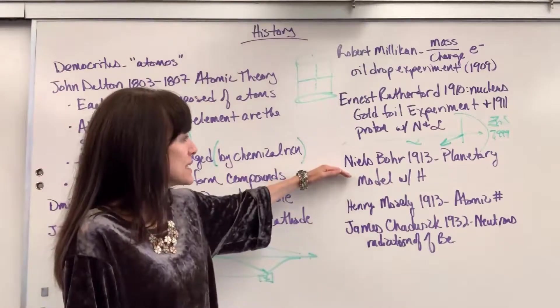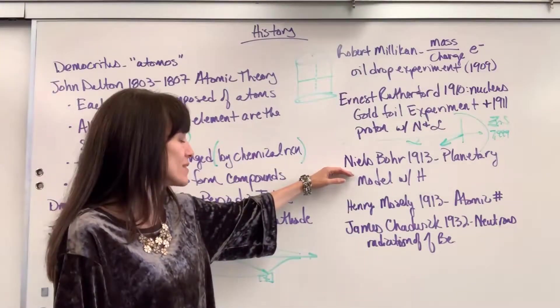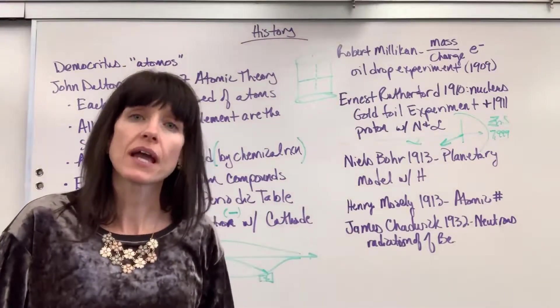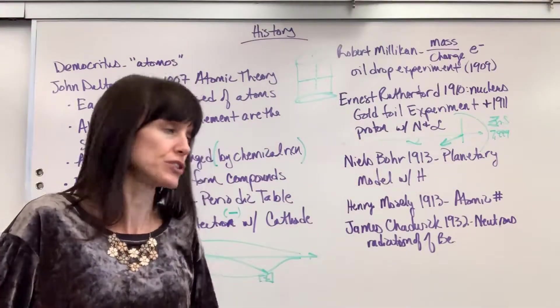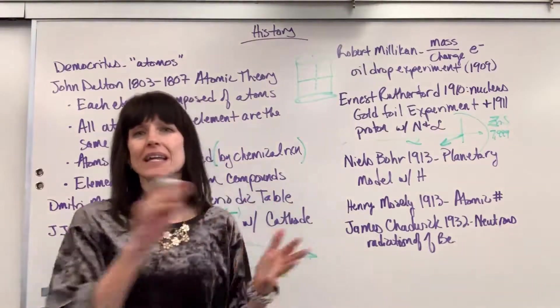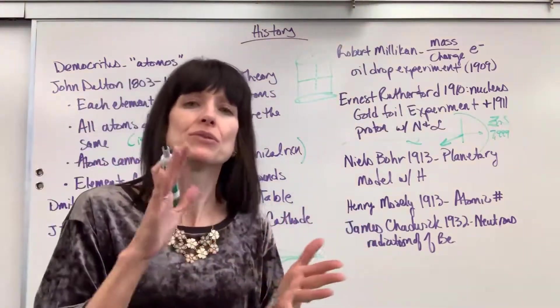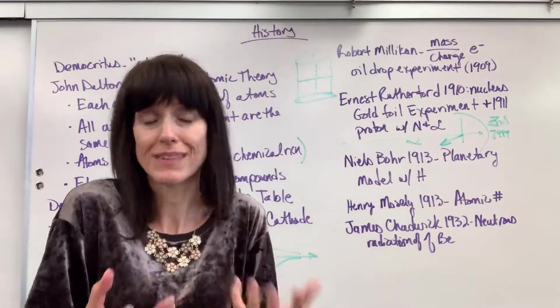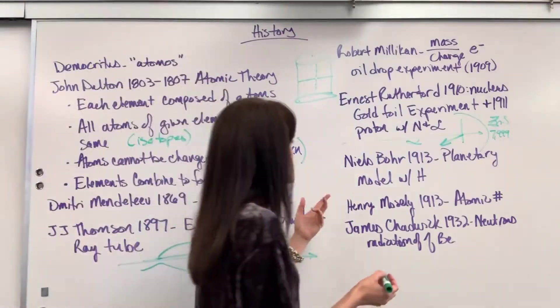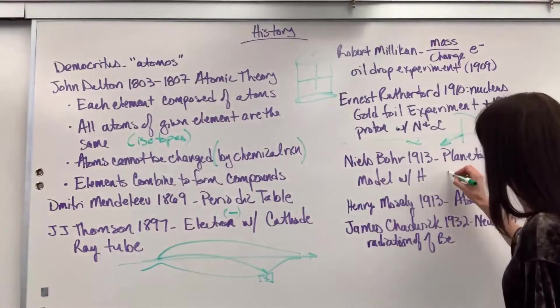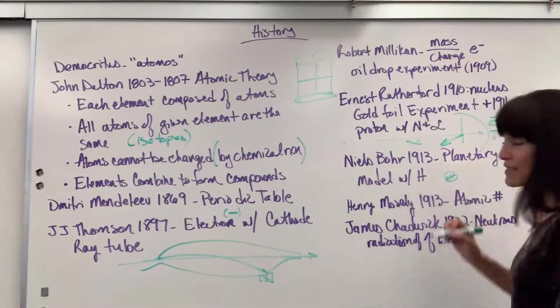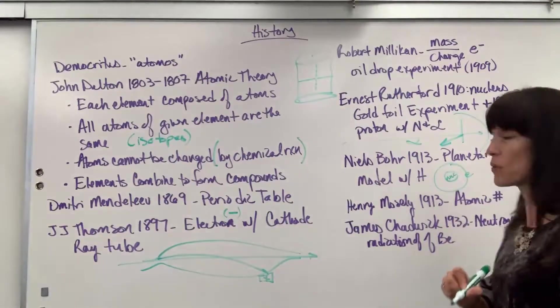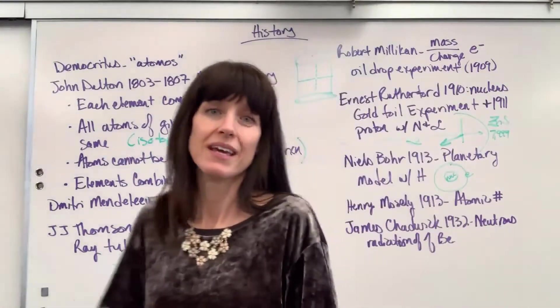In 1913, Niels Bohr, he got the Nobel Prize for this. He discovered the planetary model and was looking at the emission spectra of hydrogen. Any model that we write is going to have issues. Any model will have issues because it's not the real thing. This is what Niels Bohr came up with. We've got the nucleus in the center and then we have electrons that orbit the nucleus.